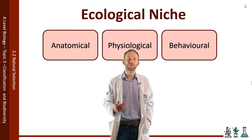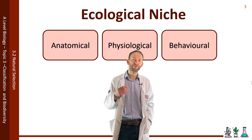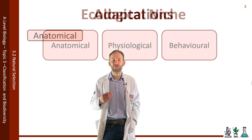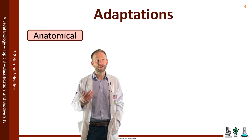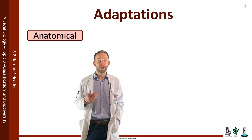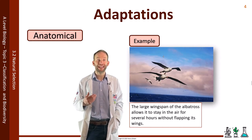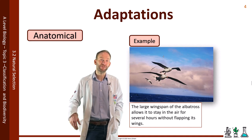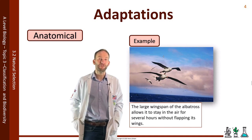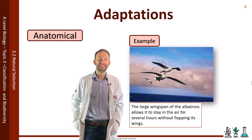Anatomical adaptations are those that involve the structure and form of an organism. For example, the large wingspan of the albatross allows it to stay in the air for several hours without flapping its wings.